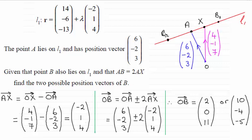Or if I'm going to get to B2 it will be OA minus twice the vector AX. I'm going in the opposite direction but two steps back. So we've got OB equals OA minus 2AX.